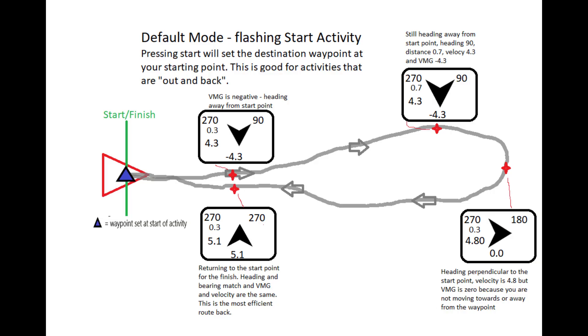Okay, let's say we don't know where we're turning for this race. So we start with the default mode. We hit go, and that sets our start waypoint. As we move away from the start line it's going to point behind us. We just try to keep that velocity at the bottom, the VMG, as high as possible. As we round the course and then head back towards the finish, you can see it's starting to indicate back towards where we started and the VMG is going to go positive.